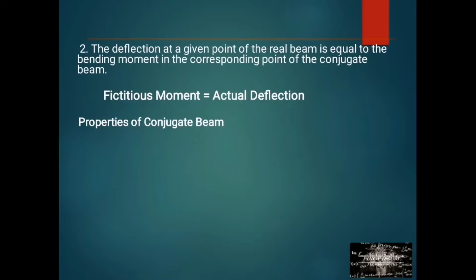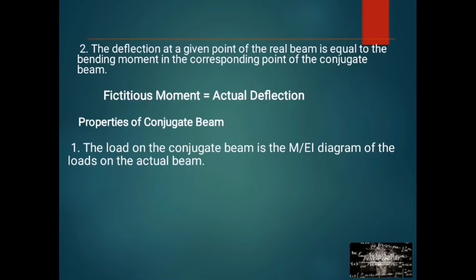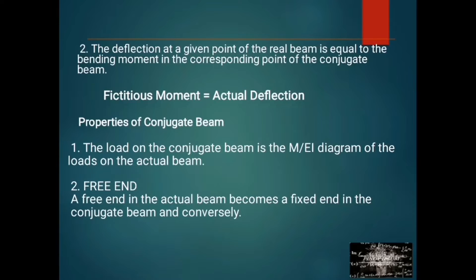We have the properties of the conjugate beam. Number 1: the load on the conjugate beam is the M over EI diagram of the loads on the actual beam. Number 2: a free end in the actual beam becomes a fixed end in the conjugate beam, and conversely.